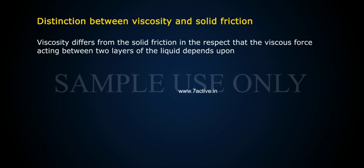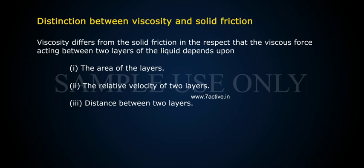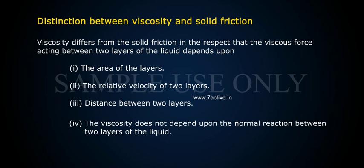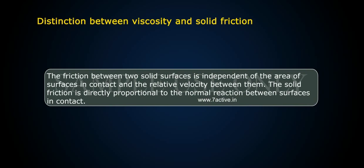Viscosity differs from solid friction in that the viscous force acting between two layers of liquid depends upon: (1) the area of the layers, (2) the relative velocity of two layers, (3) the distance between two layers, and (4) viscosity does not depend upon the normal reaction between the layers. In contrast, friction between two solid surfaces is independent of the area of surface in contact and the relative velocity between them, and solid friction is directly proportional to the normal reaction between surfaces in contact.